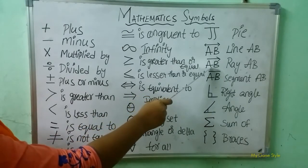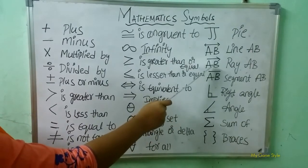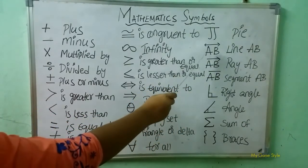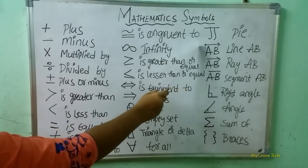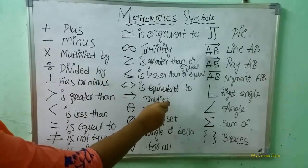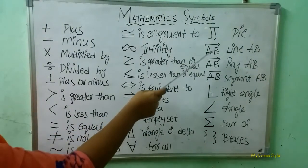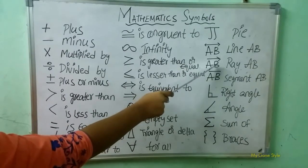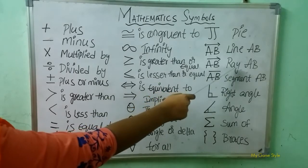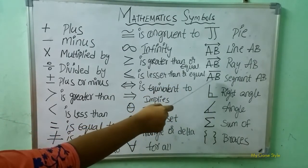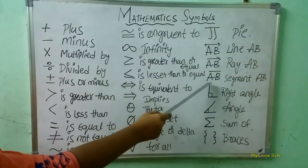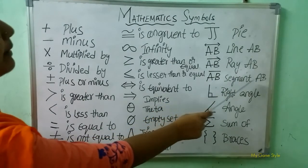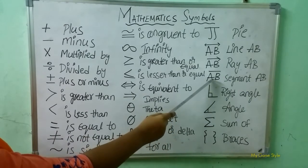Now tell me children — what is the difference between line AB and ray AB? Here this arrow is showing two sides, so this is called line AB symbol. Here what is the difference? Here the arrow is showing only one side. And segment AB — only the line is showing but arrow marks are not there. So this symbol is called segment AB symbol.